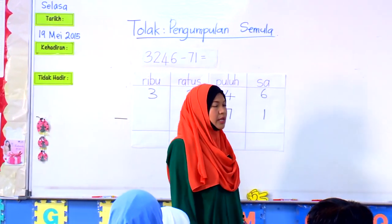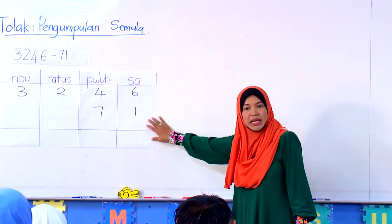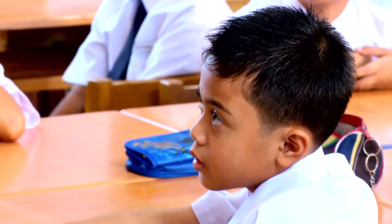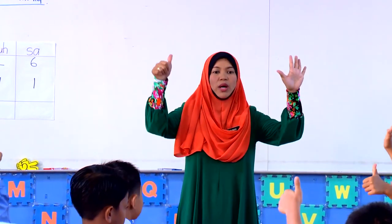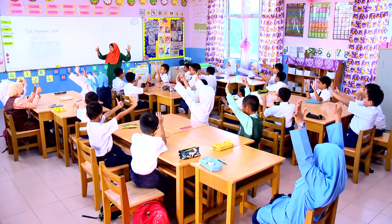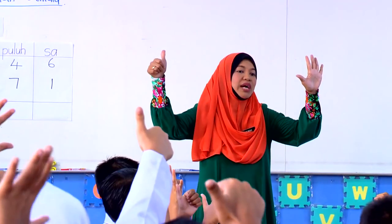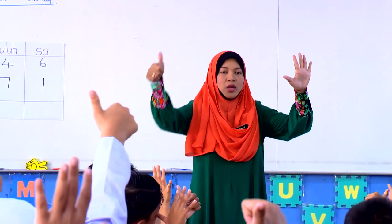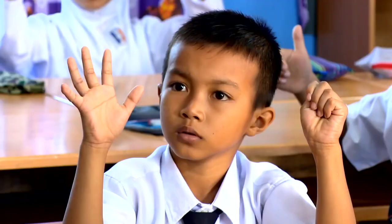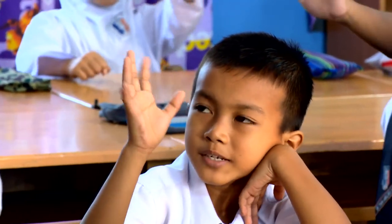Kita boleh terus keluarkan 6 jari. Keluarkan 6 jari semua. Kita nak tolak berapa? 1. Tolak 1 — maka nak tutup jari sebanyak berapa? 1. Daripada 6, kita tutup 1. Berapakah jari yang masih terbuka? 5.